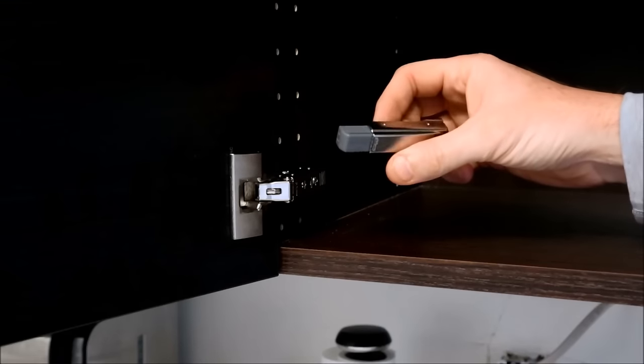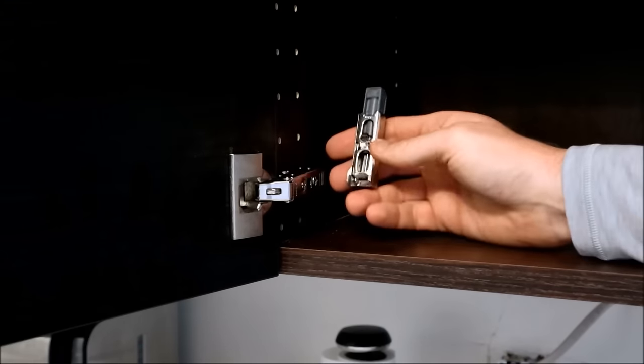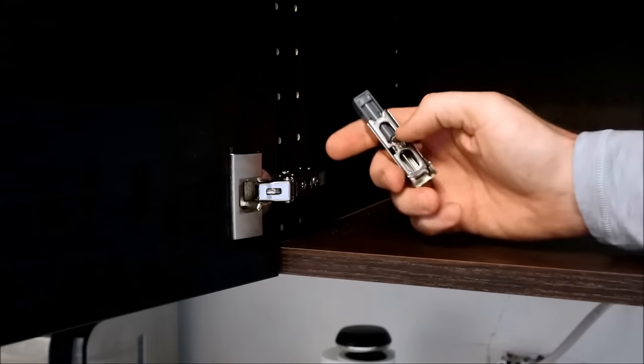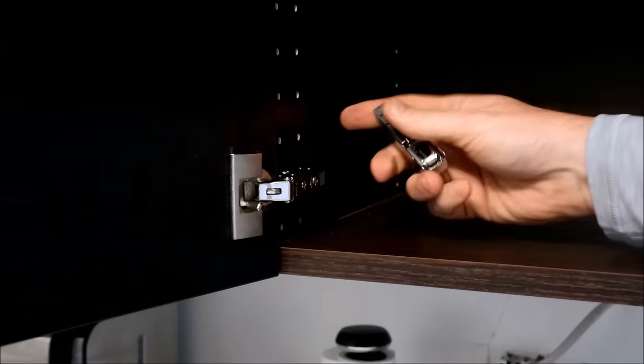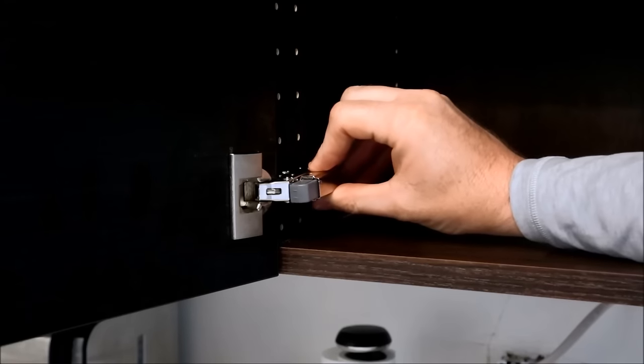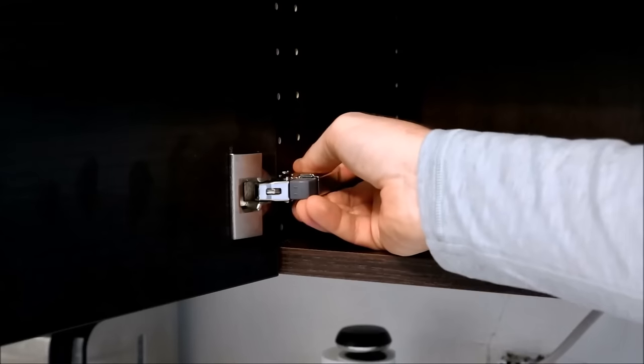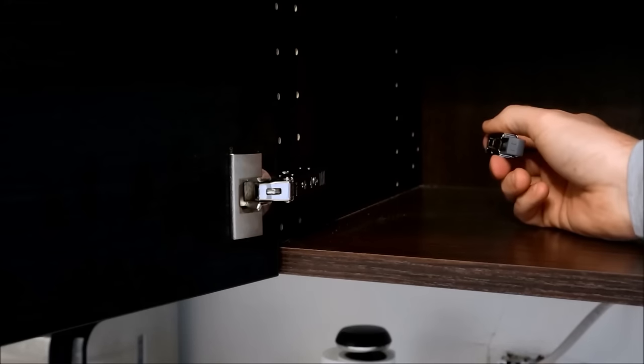To install the door dampers, which I highly recommend—in fact I would not do an IKEA kitchen without these—you install them on the top hinge, one per door. There is a hole here and some tabs on the damper and it goes on with a forward motion. It comes off with a forward motion as well.